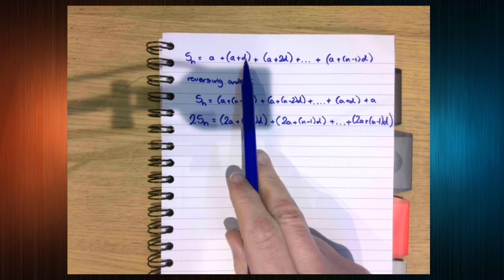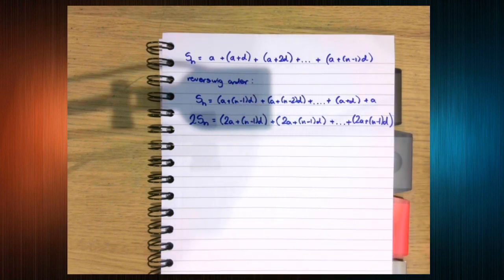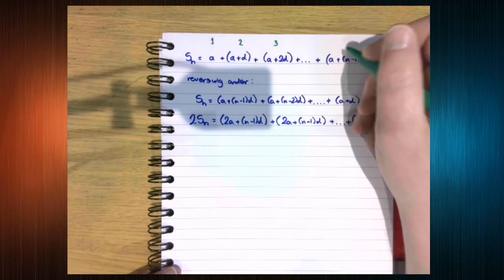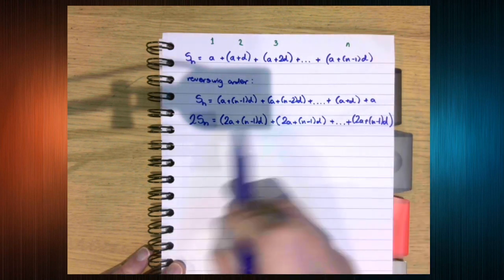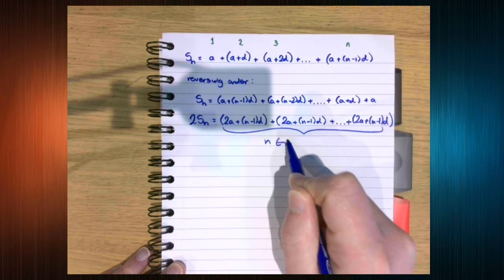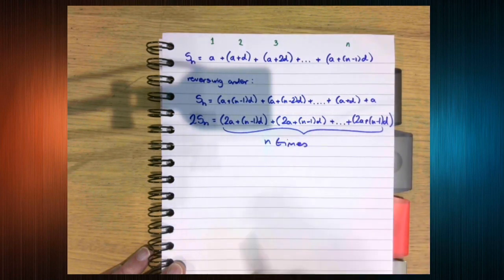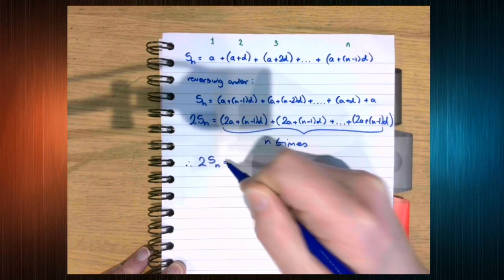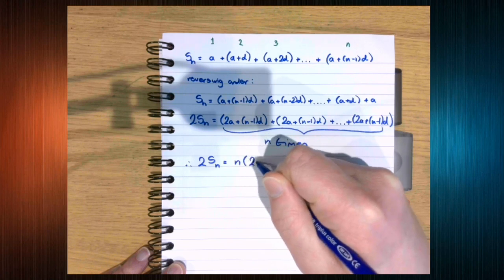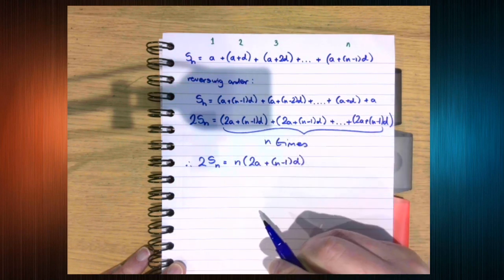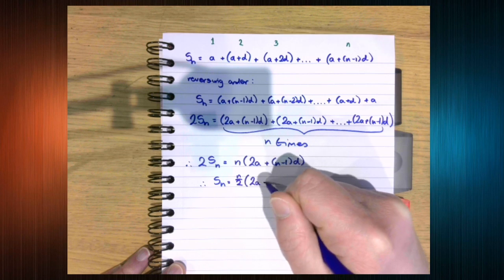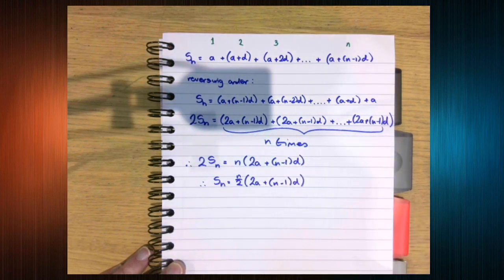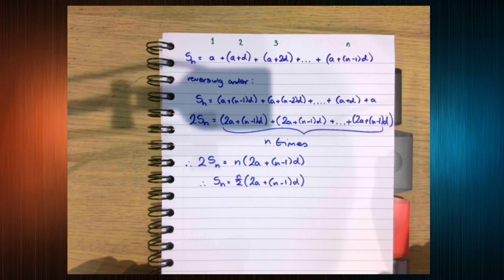Well, this is the first term, this is the second term, this is the third term, this is the nth term. So we have n terms in total. So we get this n times. So we know that 2Sn is n times 2a plus n minus 1, d. And then divided by 2, we get the formula we were looking for.